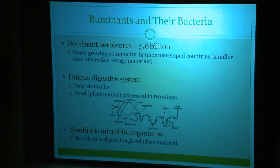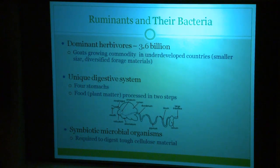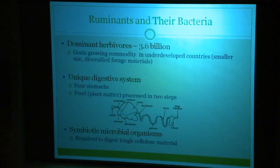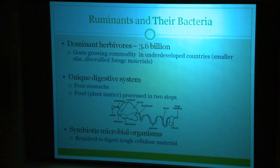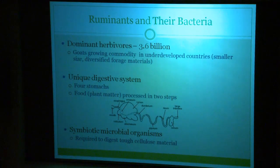Goats are a type of ruminant, and ruminants are Earth's dominant herbivores, numbering about 3.6 billion. Outside of North America, most dairy product is goat-derived, and these animals are a growing commodity in underdeveloped countries due to their smaller size and diversified range of forage materials. Ruminants possess a unique digestive system in which fibrous plant material is processed in two steps by four stomachs. Food is initially softened by enzymatic and microbial interactions in the first stomach, known as the rumen, after which it is regurgitated and chewed further before final digestion. The success of these animals is attributed to their ability to use these symbiotic microbial populations to digest and extract nutrients from tough cellulose material.